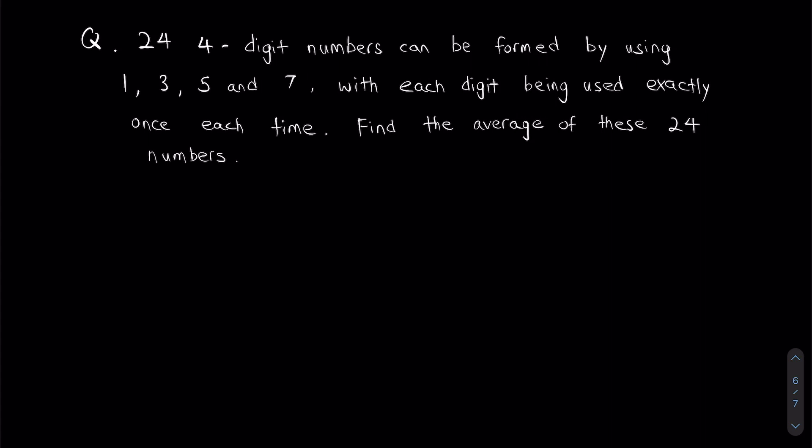For example, I cannot have three threes in one number. All the numbers must be different in a single number, and we want to find the average of these 24 numbers. Do you think it's feasible to find out what all these 24 numbers are and then average them out? Probably not. Sure, you can do that, but there has to be a better way, and there is.